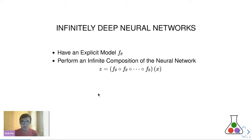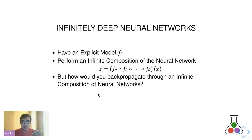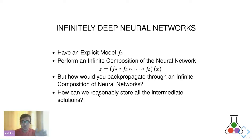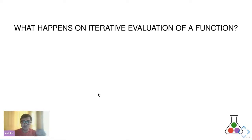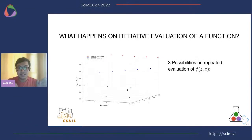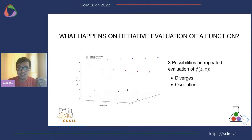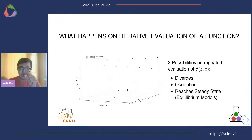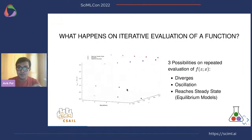That raises two questions: how would we actually back-propagate through an infinite composition, and how do we reasonably store those intermediate solutions since there are potentially an infinite number of them? When you iteratively evaluate the same function over and over again, there are three common possibilities: the solution diverges, the solution oscillates between multiple values, or it reaches a steady state or equilibrium. This third case is what we are mostly concerned about — if we evaluate a function for n times and reach a constant value, we do not need to evaluate until infinity.